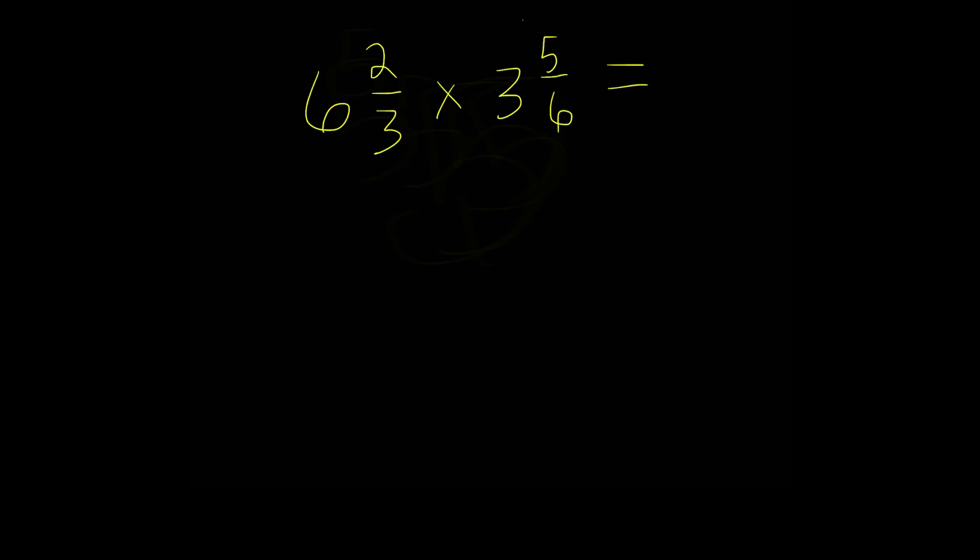Alright. I'm assuming you guys attempted to do this problem and have an answer. So remember our first step is to convert both of these mixed numbers into improper fractions. So 6 and 2 thirds. We first multiply the 6 and 3. That's 18. And then we add our numerator 2. And this is 20. So we have 20 as our numerator. And then we simply just bring our denominator down. So 3 is our denominator.